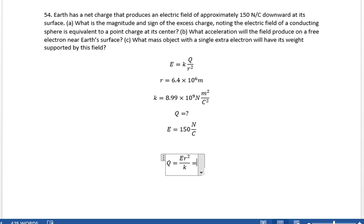And E in this case is 150 newtons per coulomb. One of the ways to think about this is because the E field is downward towards the charge, it's negative because positive E field points away from a charge.